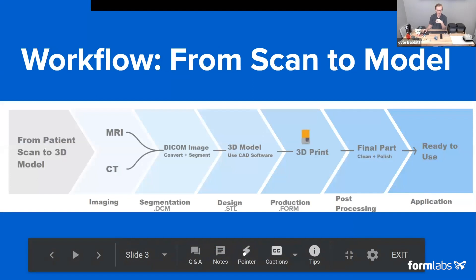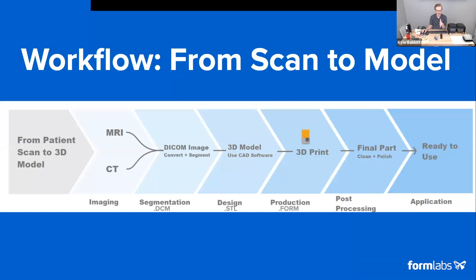Let's go through the workflow from scan to 3D printed model. Depending on the desired tissue to be printed, the patient will have a CT scan or an MRI. The slice thickness you want for a good 3D model is around one millimeter — a larger slice thickness will result in a printed file with larger layer lines. You always want to start with good quality scan data to produce that DICOM image, the file that comes from the CT or MRI. Once you have the DICOM file, you'll start segmentation — either automatically using software or manually, choosing the region of interest in every single slice.